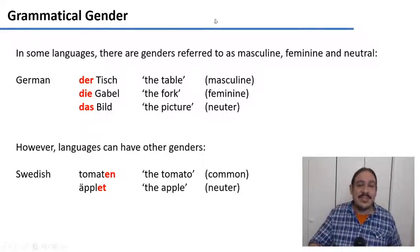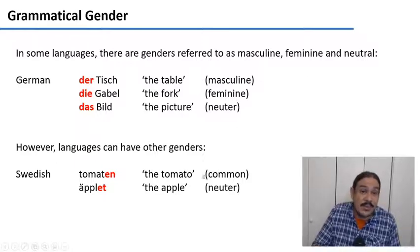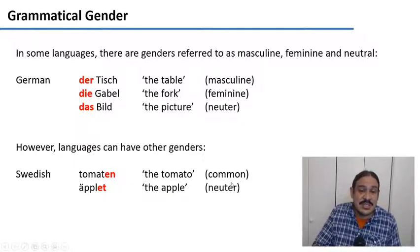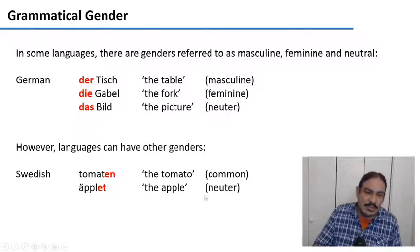In many languages you have genders like masculine and feminine, but there can be other ones. For example, in Swedish the genders are common and neuter, as in 'tomaten' (the tomato) and 'äpplet' (the apple). These are common and neuter gender, and you can see that they have markings on the nouns.